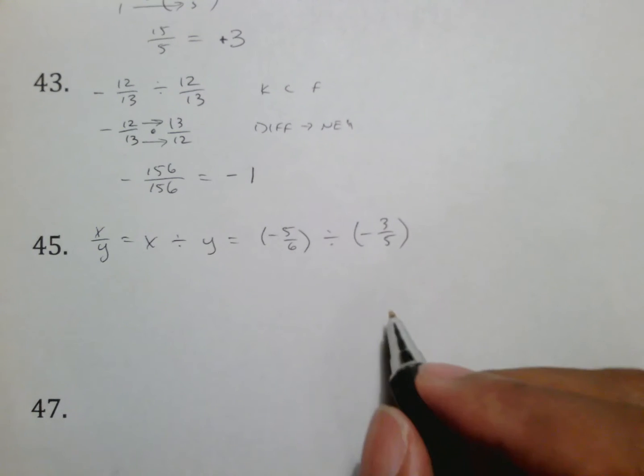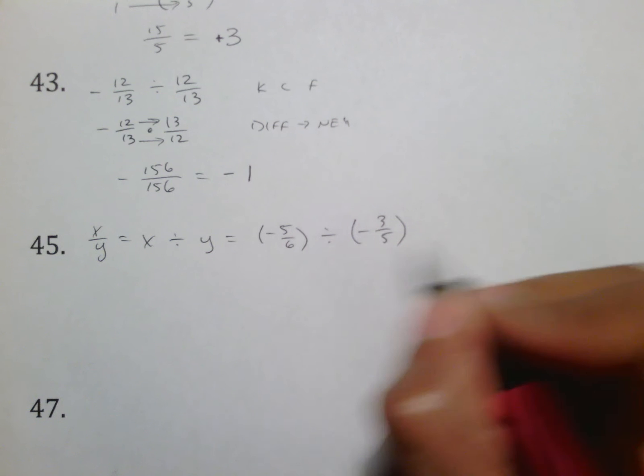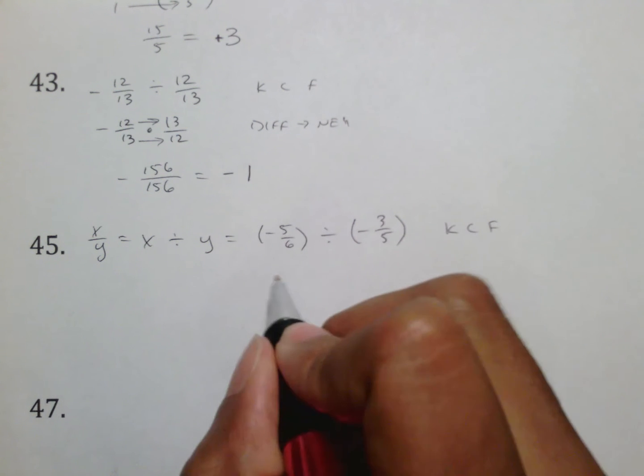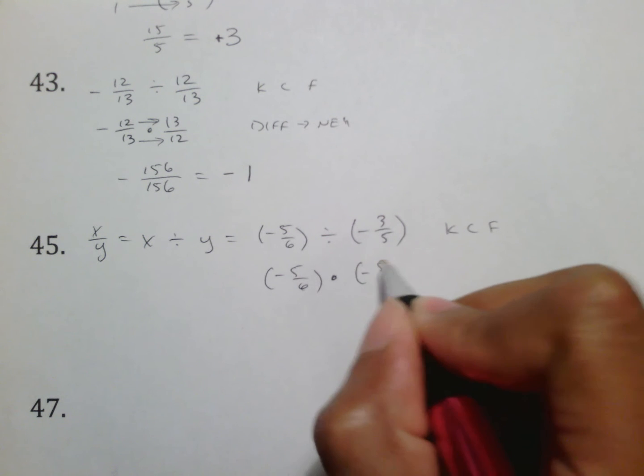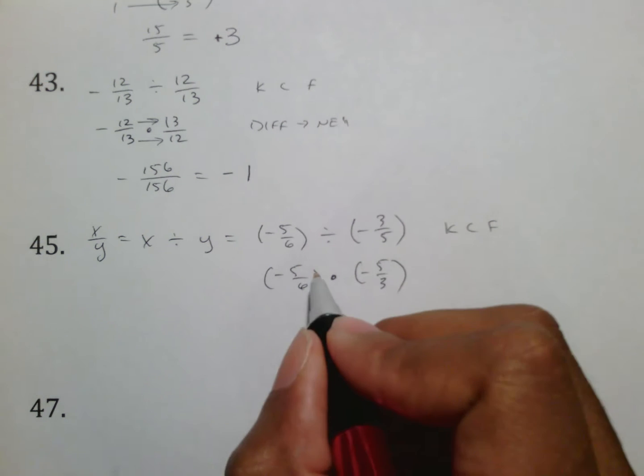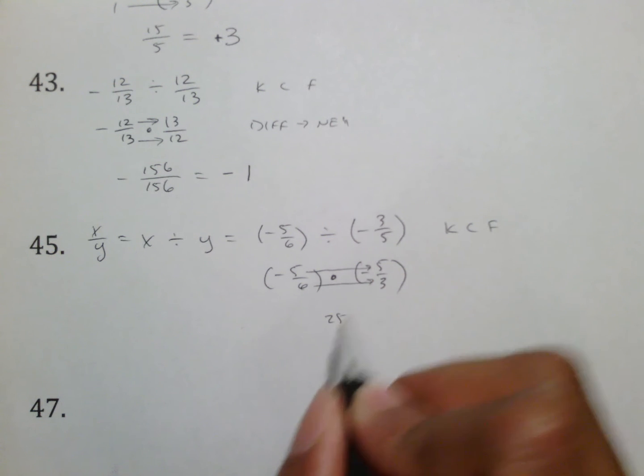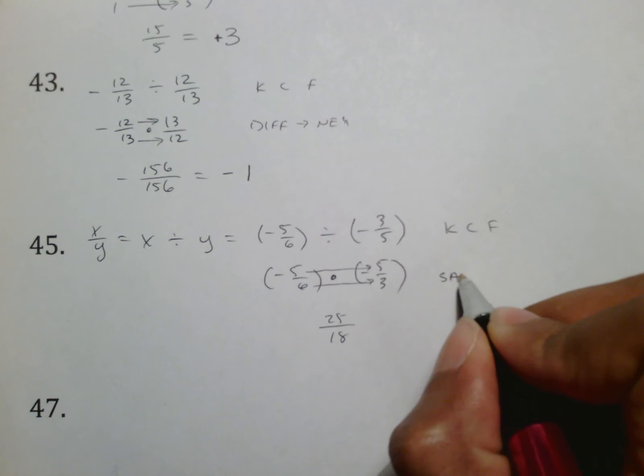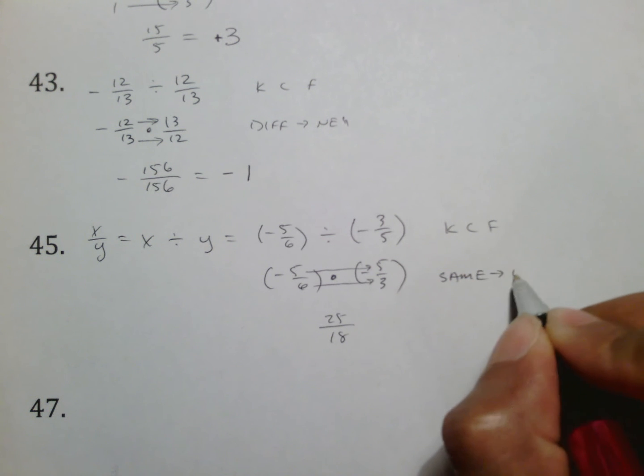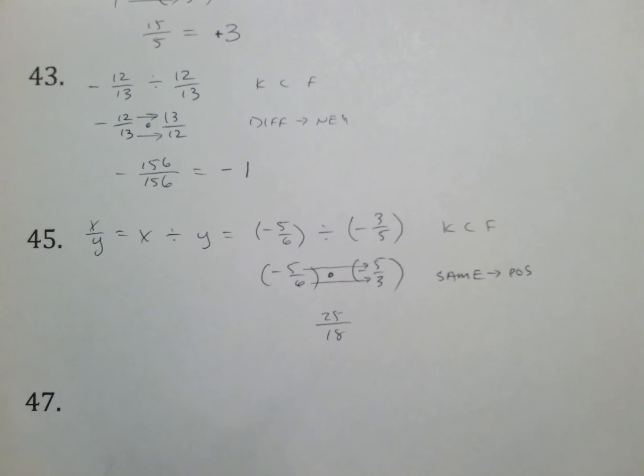And then we work this out the same way we did before. Here we keep the negative 5 sixths the same because we keep change flip. So negative 5 over 6, change that, flip this one to negative 5 thirds, multiply. 5 times 5 is 25, 6 times 3 is 18. Two signs are both negative, and remember same means that it should be positive. Or again, you can think of flipping that coin twice, and it would be heads all over again, which means that it works out just fine.